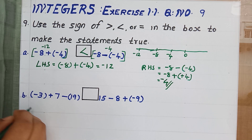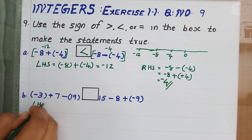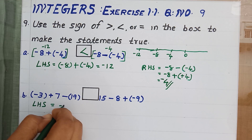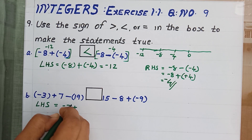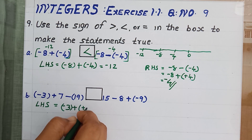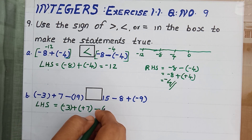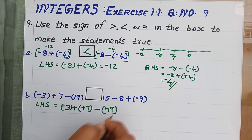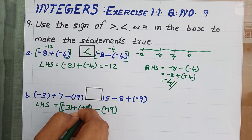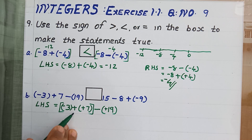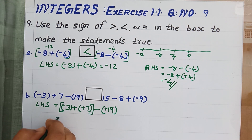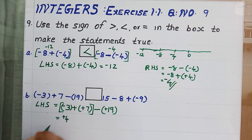Question number B. For doing this problem also, we should find the value of LHS. LHS is equal to minus 3 plus positive 7 minus positive 19. Select the first two numbers: the operation is addition and both are of different sign, so just subtract and we will be getting 4, and give the sign of the greatest number, which is positive.